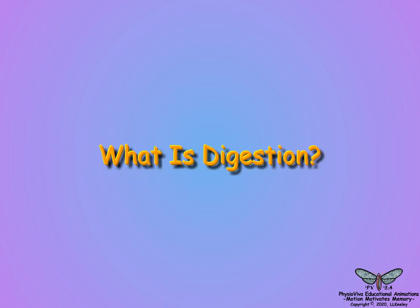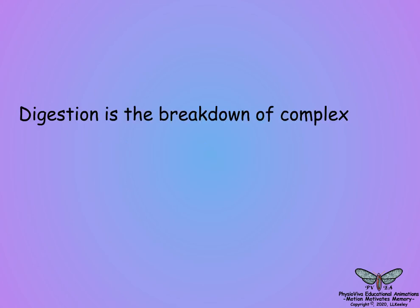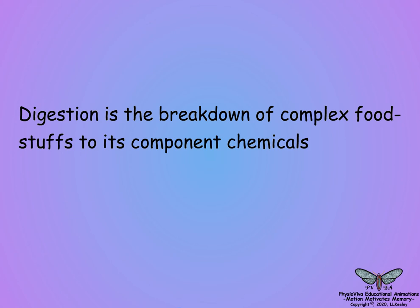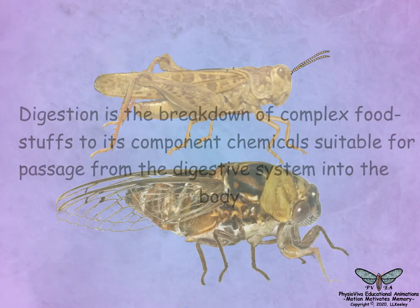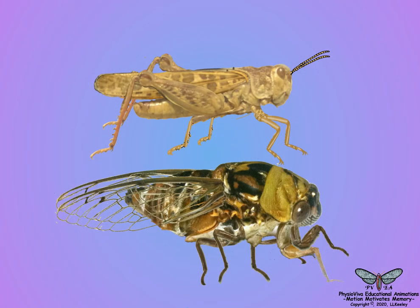What is digestion? Digestion is the breakdown of complex foodstuffs to its component chemicals suitable for passage from the digestive system into the body. Insects feed on every conceivable form of organic matter, and because of this, insects have extensive diversity in the structures of their digestive systems. Therefore it must be stressed that there are too many digestive system specializations to describe them all in a brief video.